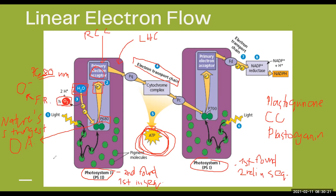So far in the process — between Photosystem 2 and Photosystem 1 — linear electron flow has produced O2 from water splitting and ATP from the electron transport chain. Once the electron has been passed through the ETC, it moves to Photosystem 1 and is passed down to P700.